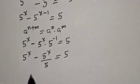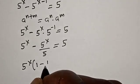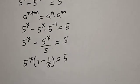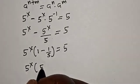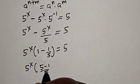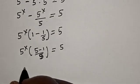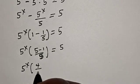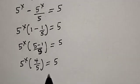Here we have 5 raised to power x common. Let's bring it out: 5 raised to power x bracket open, 5 raised to power x minus 1 over 5, close bracket, is equal to 5. This is 5 raised to power x bracket 5 minus 1 over 5 is equal to 5. Then 5 raised to power x bracket 5 minus 1, that is 4, over 5, is equal to 5.